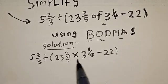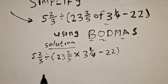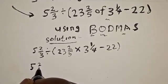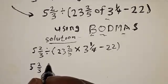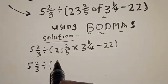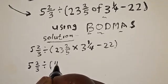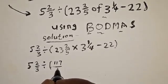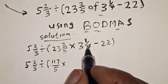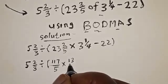We are still dealing with bracket and 'of', so we change 'of' to multiplication. The next step — still working with the bracket — we have 5 and 2/3 divided by open bracket: 5 times 23 = 115, plus 2 = 117 over 5, then multiply by 4 times 3 = 12 plus 1 = 13 over 4.